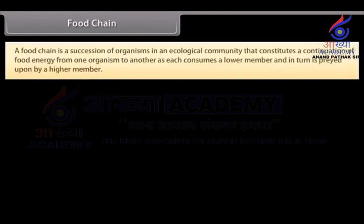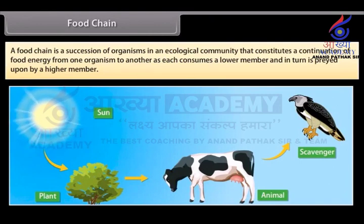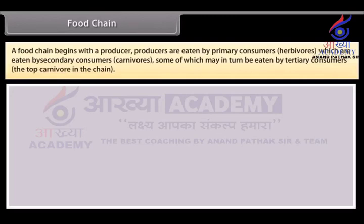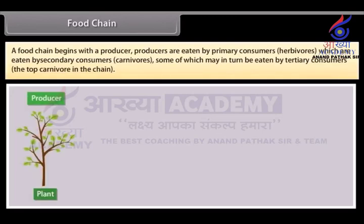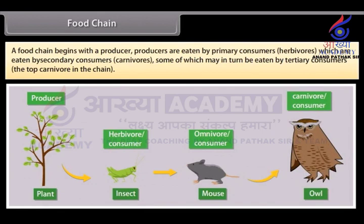Food chain: A food chain is a succession of organisms in an ecological community that constitutes a transfer of food energy from one organism to another, as each consumes a lower member and in turn is preyed upon by a higher member. A food chain begins with a producer. Producers are eaten by primary consumers — herbivores — which are eaten by secondary consumers — carnivores — some of which may in turn be eaten by tertiary consumers, the top carnivore in the chain.